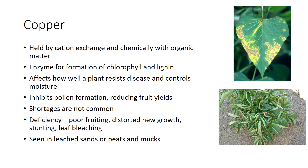Shortages are not common, but symptoms include poor fruiting, distorted new growth, stunting, and leaf bleaching. Shortages are most likely to be seen in either leached sands or peats and mucks. A few pounds per acre of copper sulfate mixed into the soil usually supply all the copper that is needed. Carrots grown on organic soils may need extra copper, but small grains and other vegetables sometimes suffer as well.